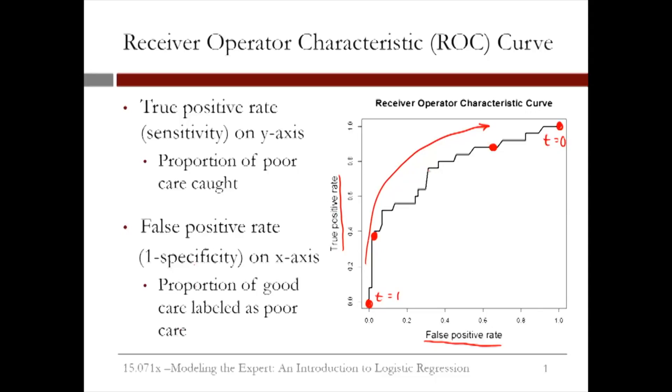In the middle, around (0.3, 0.8), you're correctly labeling about 80% of the poor care cases with a 30% false positive rate.